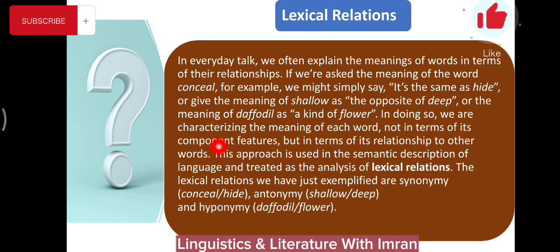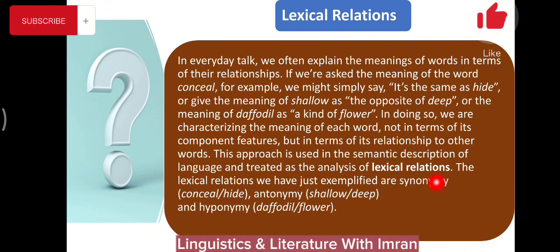In doing so, we are characterizing the meaning of each word not in terms of its component features — such as male or female, living or non-living — but in terms of its relationship to other words. This approach is used in semantic description of language and treated as the analysis of lexical relations. So the lexical relations we have exemplified are synonymy (conceal and hide), antonymy (shallow and deep), and hyponymy (daffodil and flower).